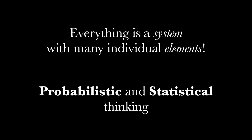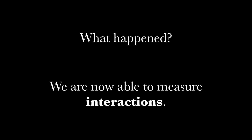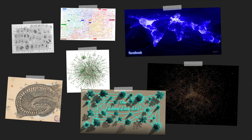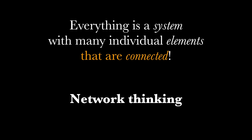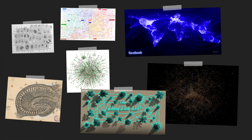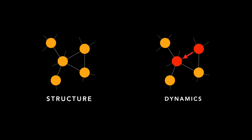This idea — that everything is a system with many individual elements — led to probabilistic and statistical thinking in the 19th century. What I want to argue is that we are now able to measure interactions across all kinds of systems: biological, ecological, social. That leads us to the idea that not only is everything a system with many individual elements, but everything is a system with many individual elements that are connected and interact. That's the core of network thinking — because networks are everywhere, and once we find a network, we get a nice abstraction.